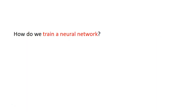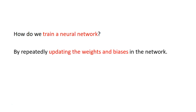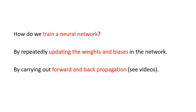So how do we train a neural network? The first thing to know is that we are trying to repeatedly update the weights and the biases in the network. A network is made up of many different things, but the main thing we're trying to do is get the right weights and biases so that we can carry out an accurate prediction. The way we do this is by carrying out forward and back propagation.